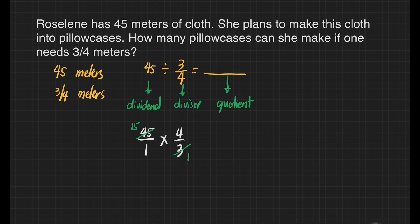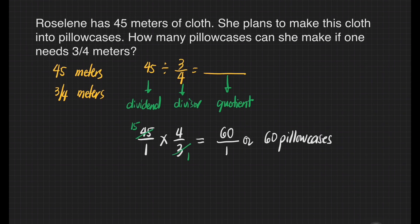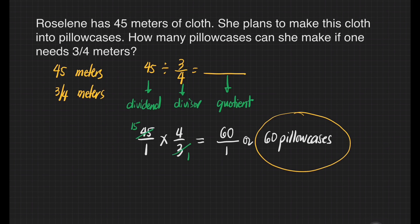15 times 4 is equal to — let's show that. 5 times 4 is equal to 20, write 0 here, carry the 2. 1 times 4 is equal to 4, plus 2 is equal to 6. So 15 times 4 is equal to 60. Then 1 times 1 is equal to 1, or 60 divided by 1 is equal to 60. That makes 60 pillowcases. This means that Roseline can make 60 pillowcases out of her 45 meters of cloth.